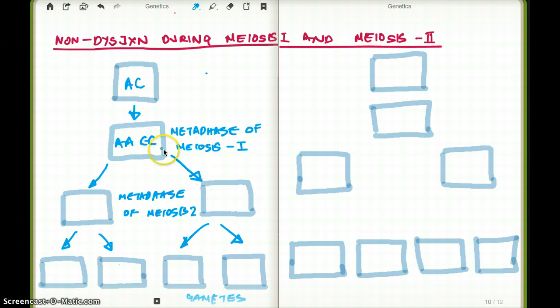If nondisjunction doesn't happen, both the A, A and the C, C is going to come here, still joined. C, C, still joined. Now, what's going to come here? Nothing. These gametes are going to be empty. Nothing is going to happen here. This is just obsolete.